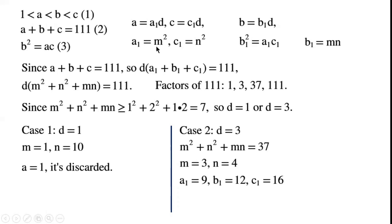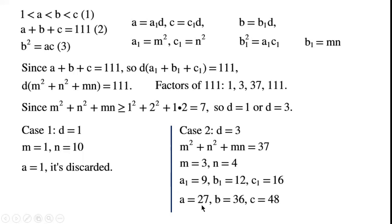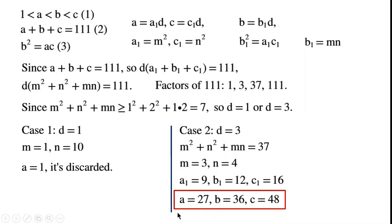If D equals 3, then M squared plus N squared plus M·N equals 37, giving M=3, N=4 as the unique solution. So A1 equals M squared equals 9, B1 equals M·N equals 12, C1 equals N squared equals 16. Therefore A equals A1·D equals 27, B equals B1·D equals 36, C equals C1·D equals 48. This is the only set of solutions.